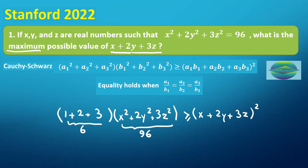x² + 2y² + 3z², by the assumption of the problem, is 96. So it will be 6 times 96. I can write 96 as 6 times 16. If you take the square root from both sides, x + 2y + 3z ≤ √(6 × 6 × 16) = 6 × 4 = 24. So the answer, the maximum of this, is 24.